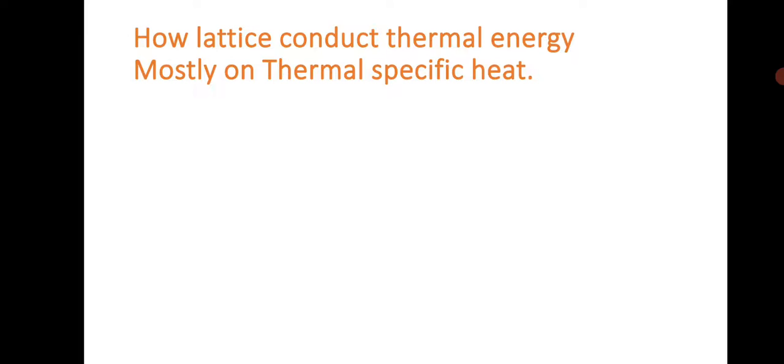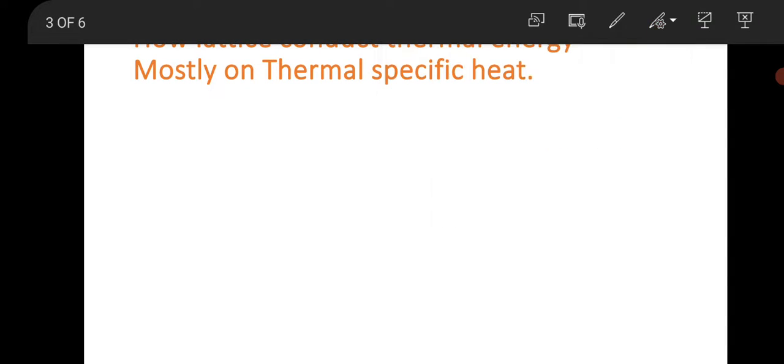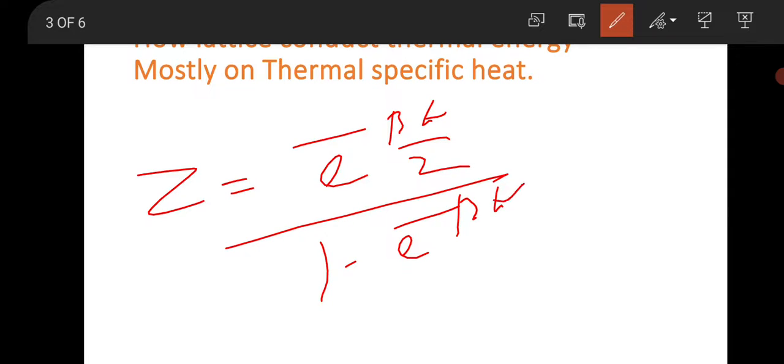The next question was from solid state physics. They asked about how lattice conducts thermal energy, specifically thermal specific heat. He explained the Einstein model and Debye model, which are quantum theories of lattice specific heat of solids. From that they went to quantum harmonic oscillator, because when explaining thermal specific heat you have to consider atoms oscillating on lattice points. They also asked about partition function, the Einstein solid, and finding the average energy. You take the atom as a quantum harmonic oscillator, then calculate the partition function Z = e^(-βℏω/2) / (1 - e^(-βℏω)). You can calculate average energy as -∂/∂β of ln Z.